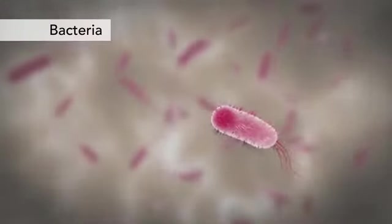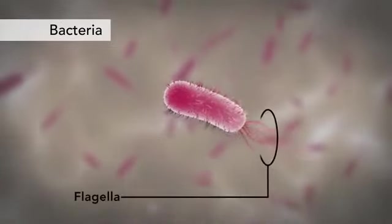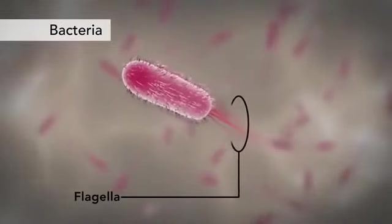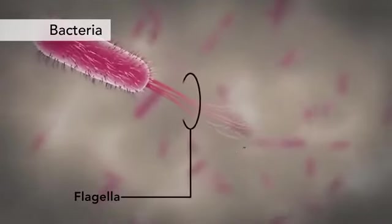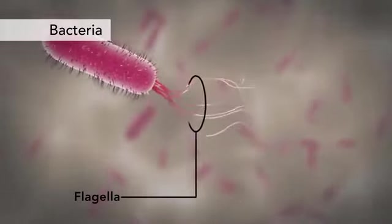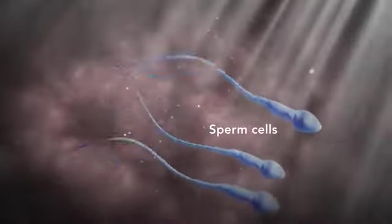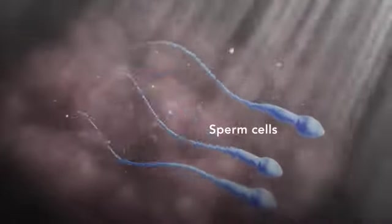Another unique feature in some cells is flagella. Some bacteria have flagella. A flagellum is like a little tail that can help a cell move or propel itself. The only human cell that has a flagellum is a sperm cell.